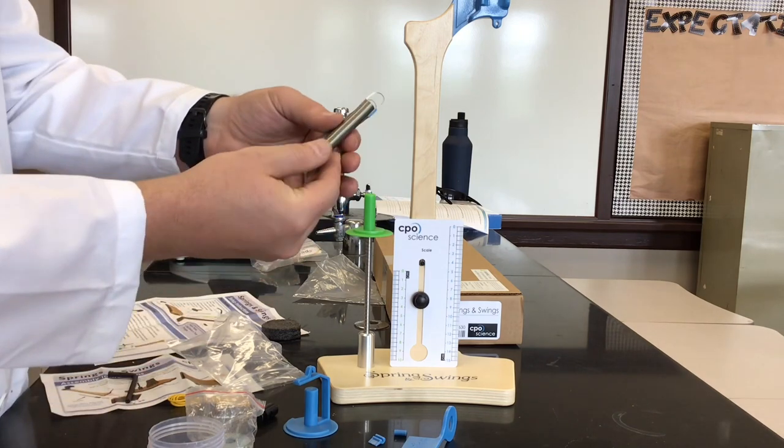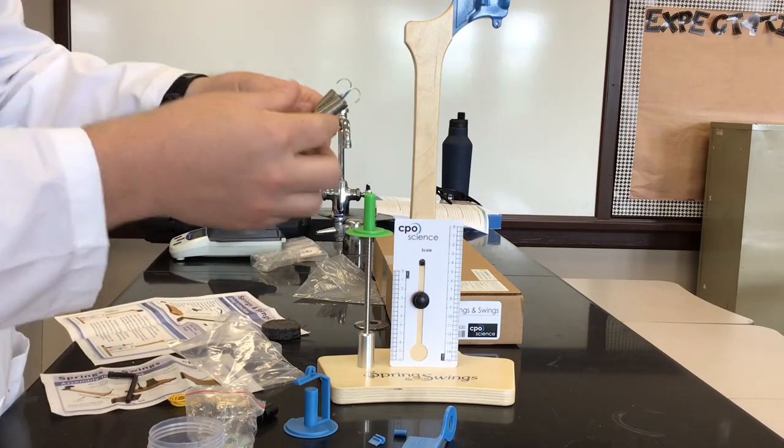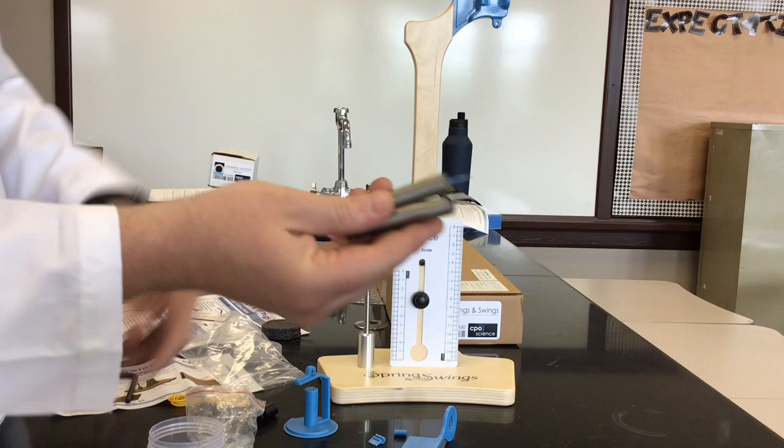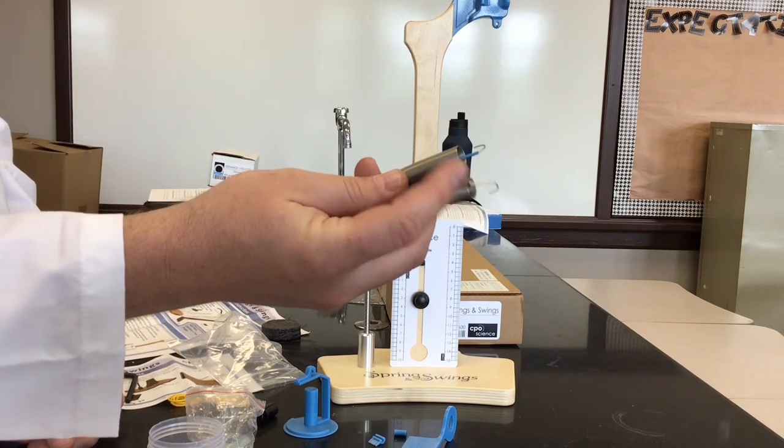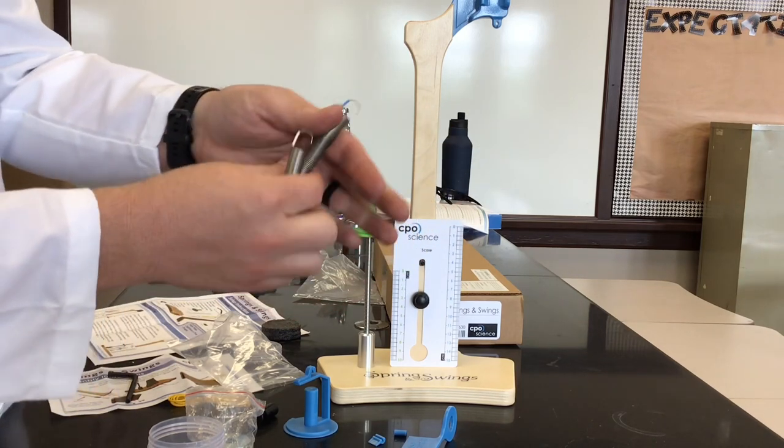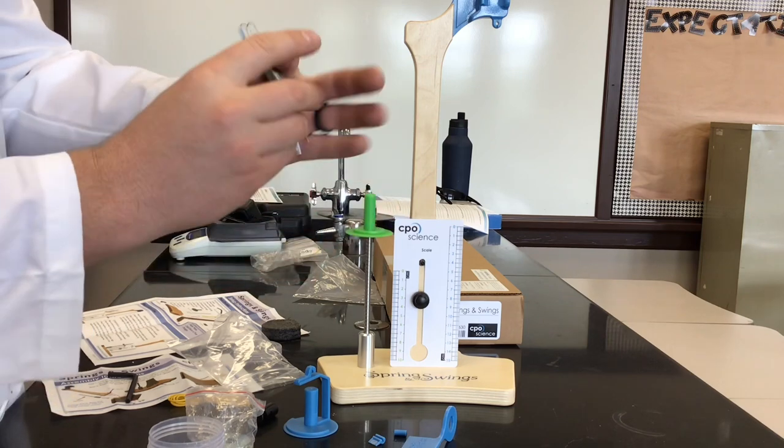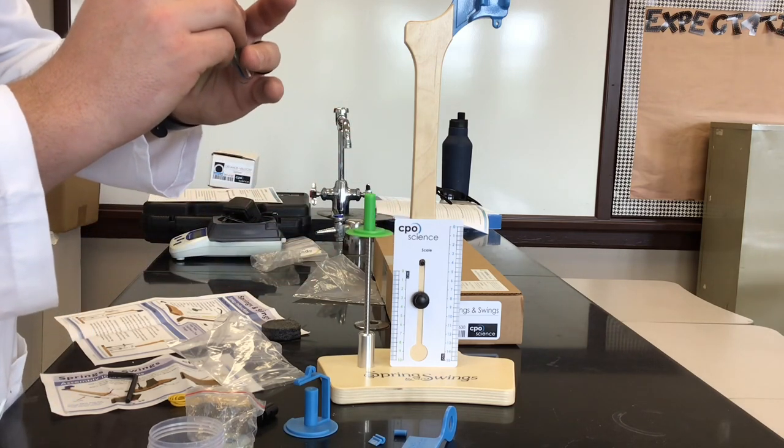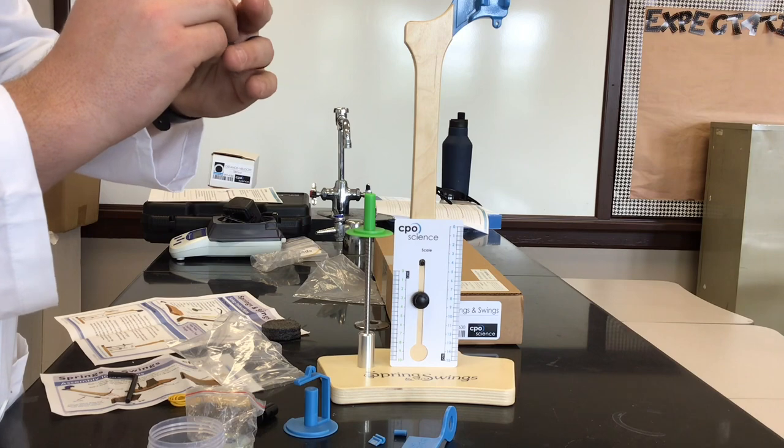And then these two springs which look very similar, but they do have, they are color-coded, so you have a blue and a white one. So make sure that you're reading in the actual instructions which ones you're using. Otherwise they're pretty similar, one slightly larger.